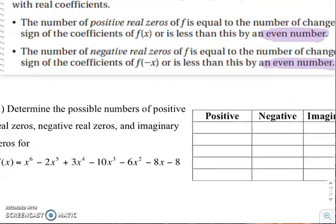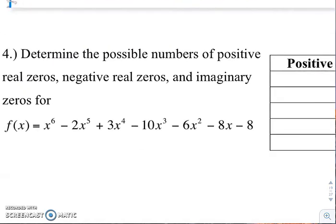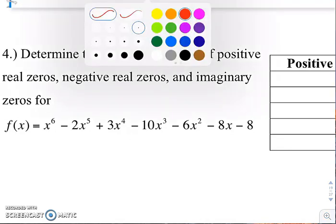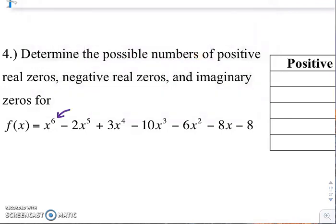So number four: x to the sixth minus 2x to the fifth plus 3x to the fourth minus 10x cubed minus 6x squared minus 8x minus 8 is your polynomial. It is a degree of six, so we know that it should have a total of six solutions, but we want to figure out what those combinations of solutions could be. This is your positive x — that's what it starts you off with. We count the number of times the sign changes from either positive to negative or negative to positive between each of your terms.